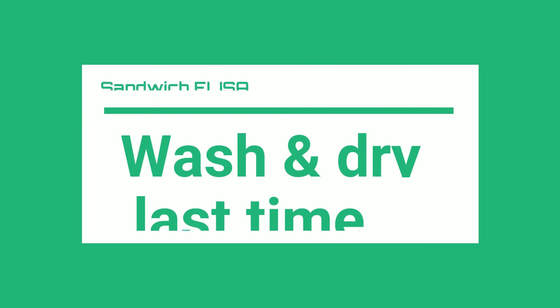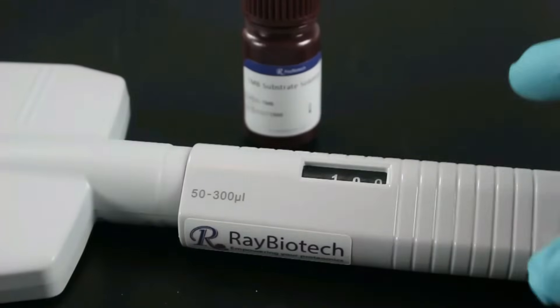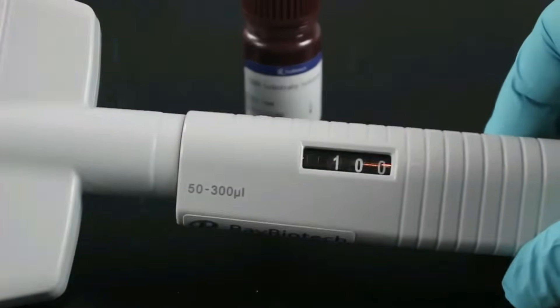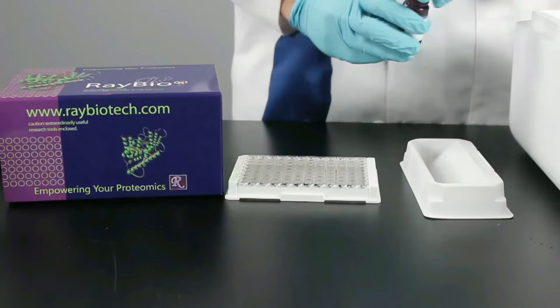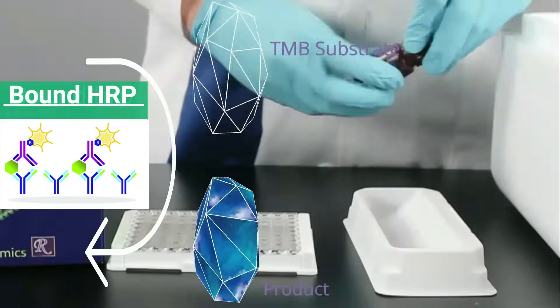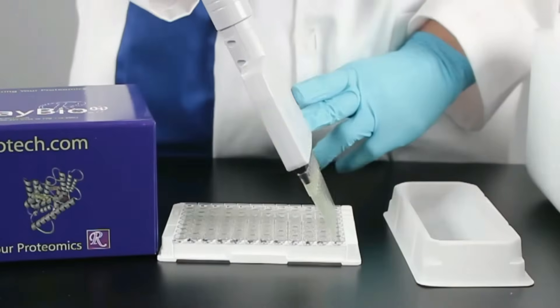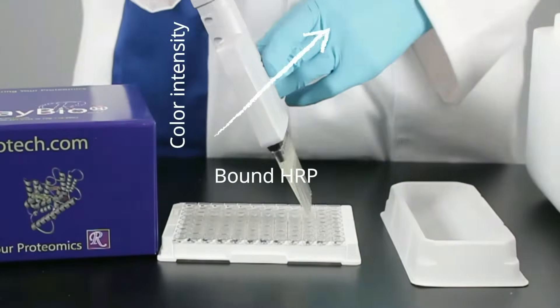Incubate covered at room temperature for 45 minutes. After this incubation, this is the last time you will wash and dry. Add 100 microliters of TMB substrate. HRP bound to the detection antibody will turn that substrate into a colorimetric product. Therefore, the bound HRP is directly related to the color intensity in each well.